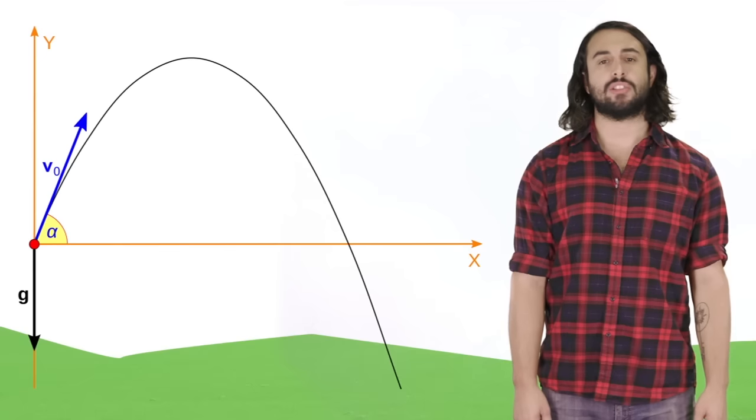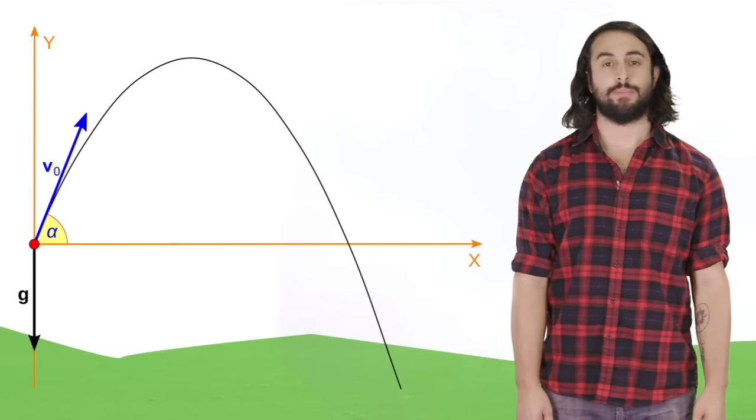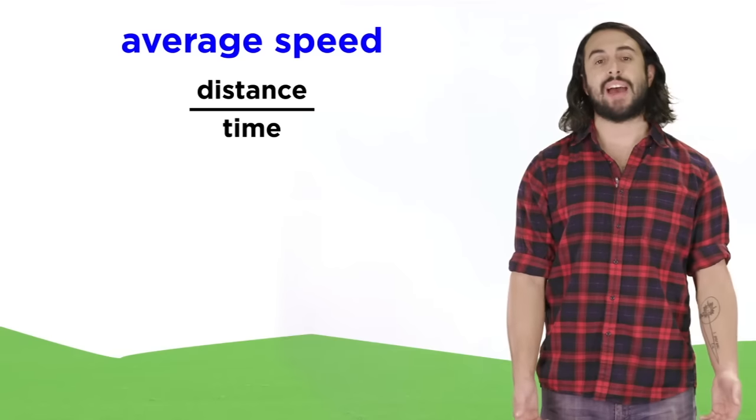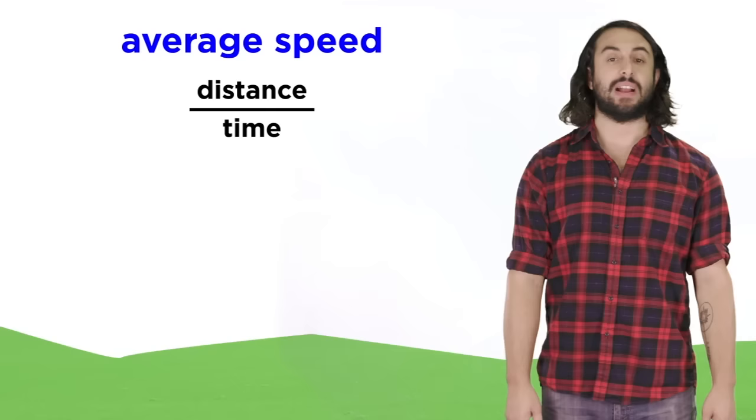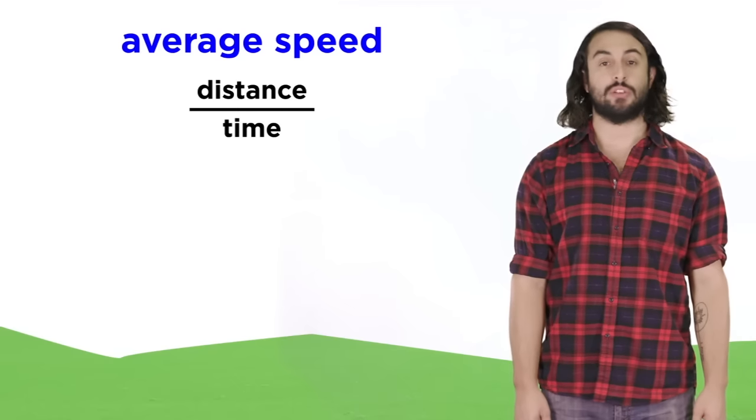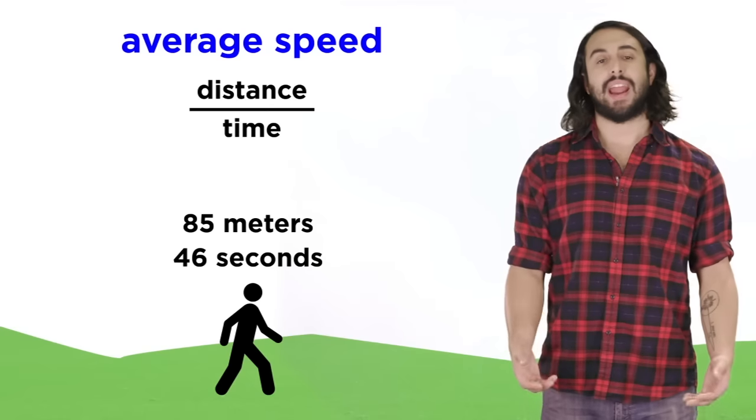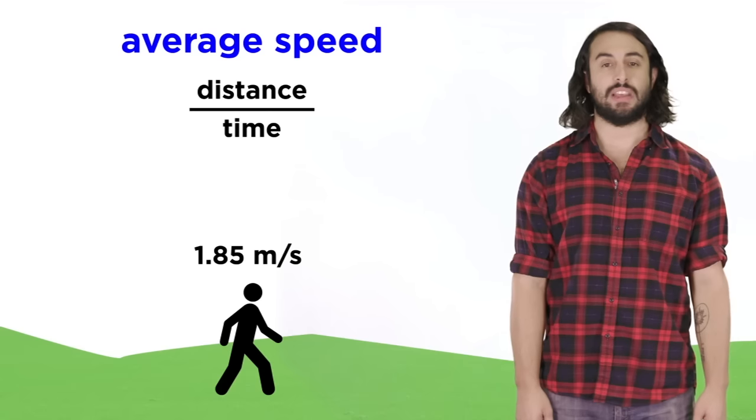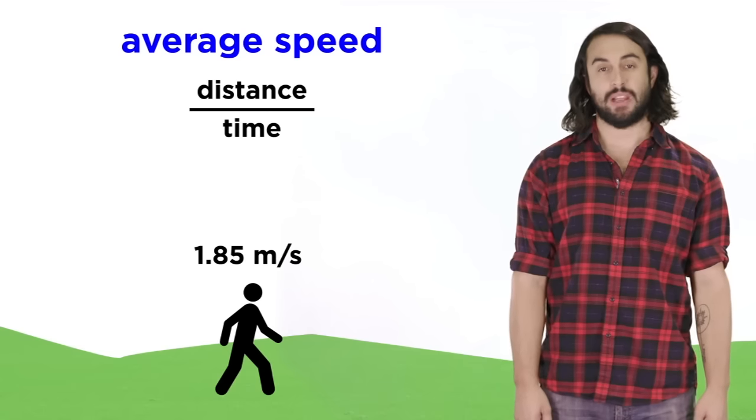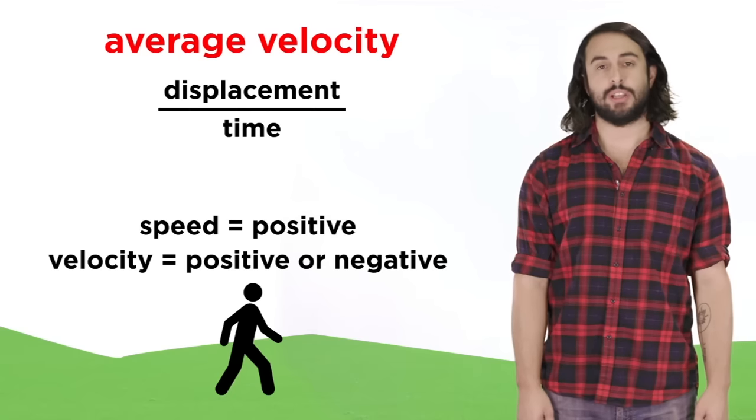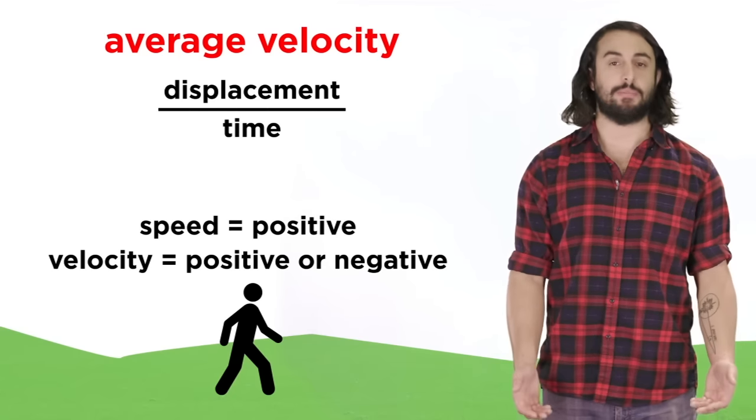Velocity vectors will be extremely important as we move forward with kinematics, where we will study the motion of objects. In general, average speed can be calculated by taking the distance traveled by an object and dividing by the time it took to do so. So if you walk 85 meters in 46 seconds, you are walking at an average speed of 1.85 meters per second. To find average velocity, you can do the same, but you would have to divide displacement by time.